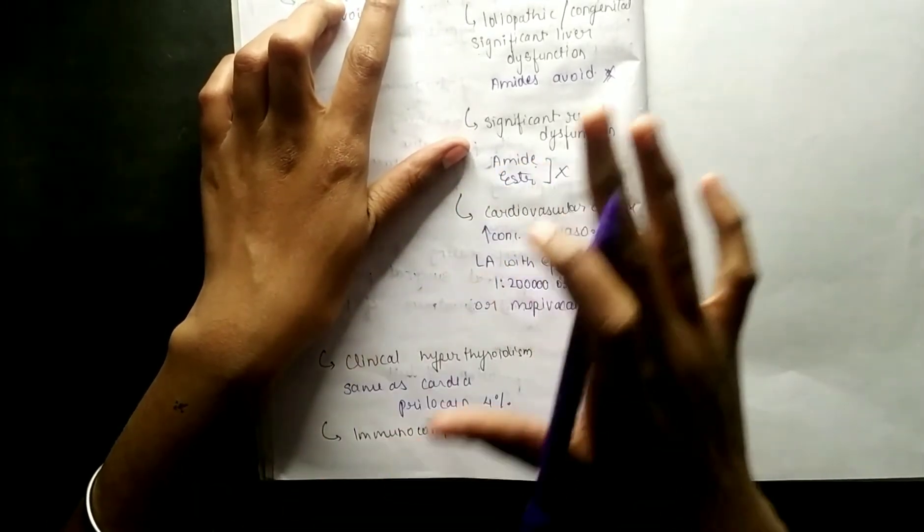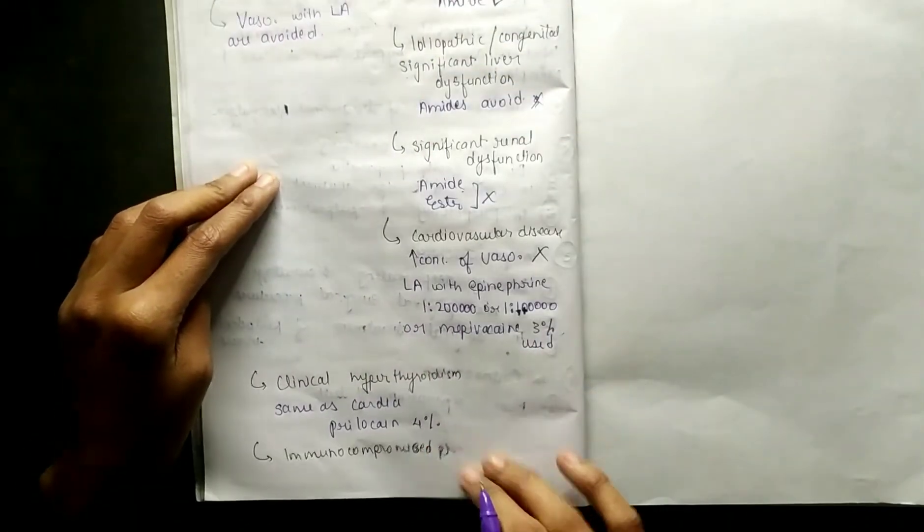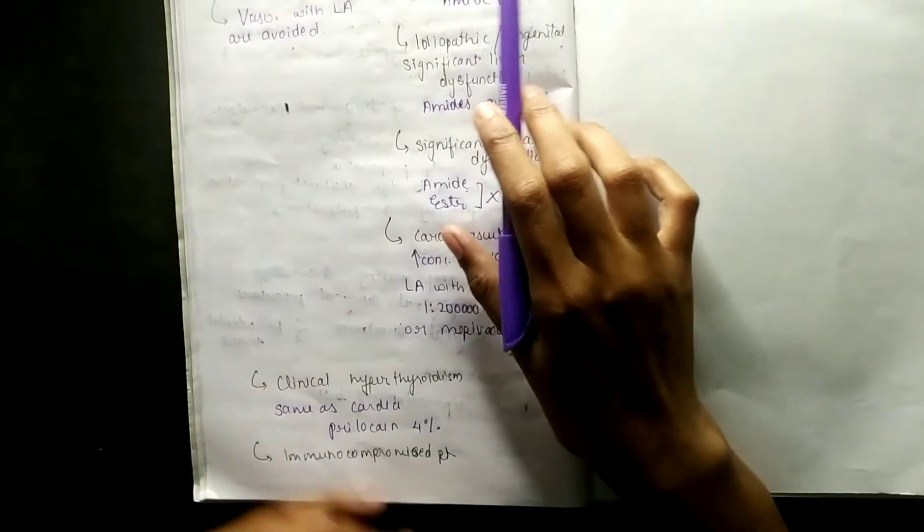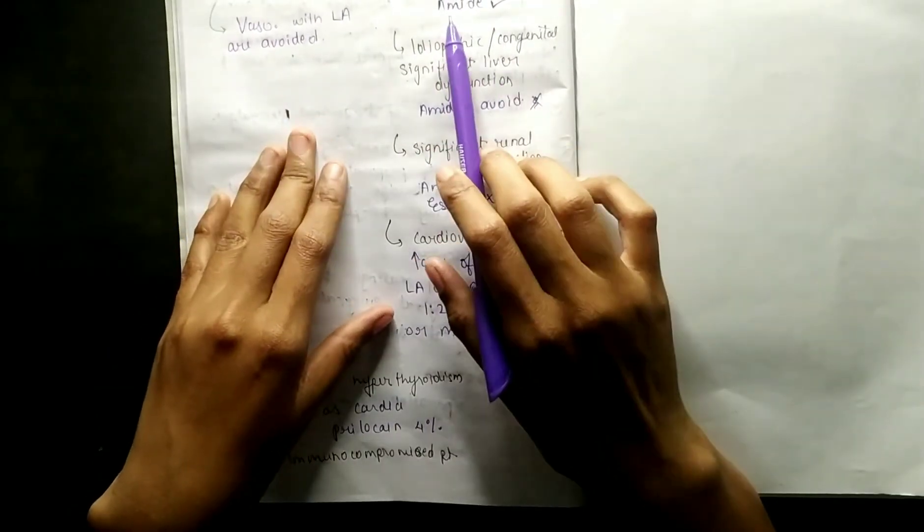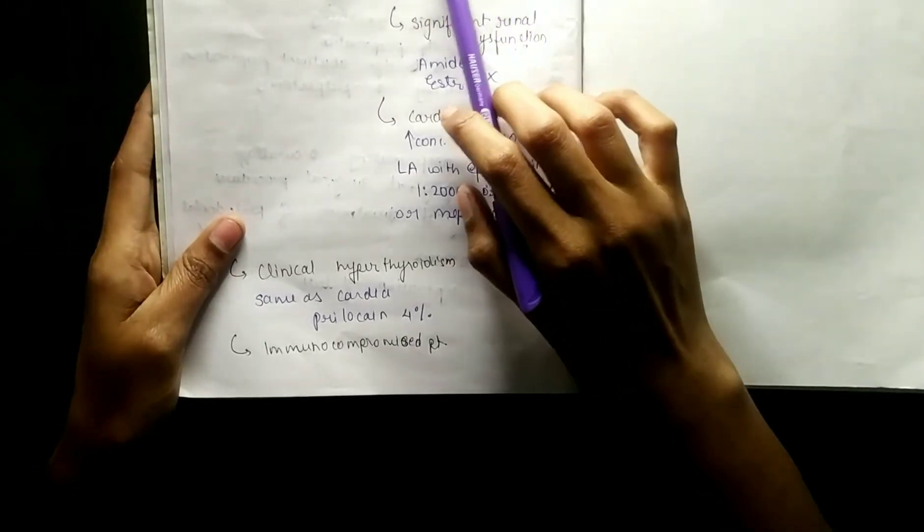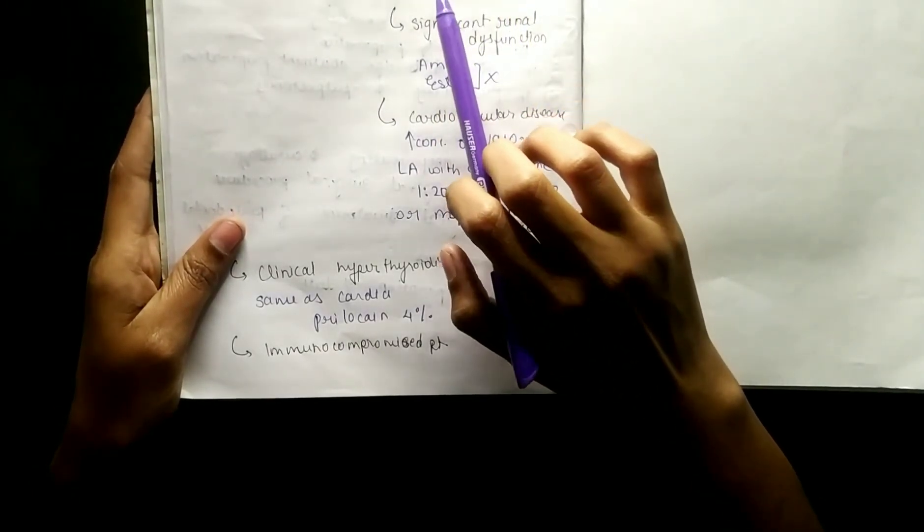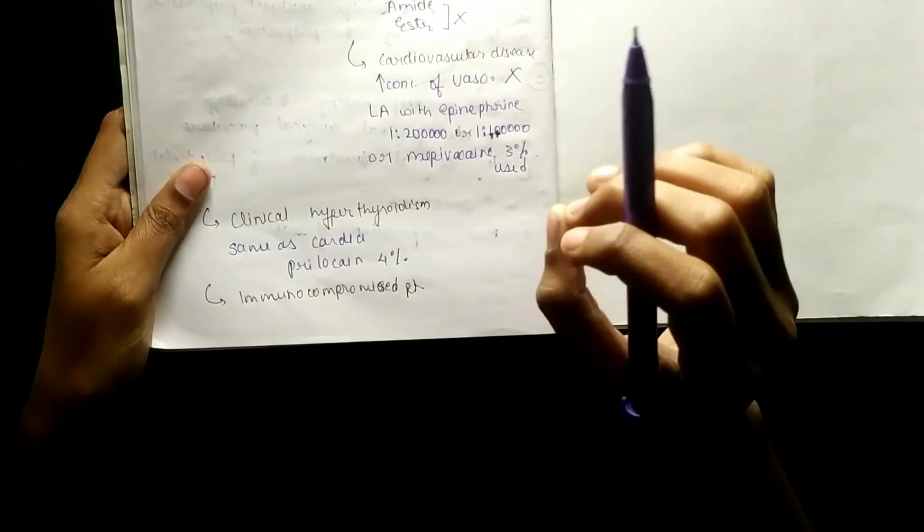Coming to relative contraindications, relative is quite long. First of all, atypical plasma cholinesterase, methemoglobinemia. If esters and amides are used, you should know what we are using. If idiopathic congenital significant liver dysfunction, then we have to use esters and avoid amides. Significant renal dysfunction, we can't use amides and esters.